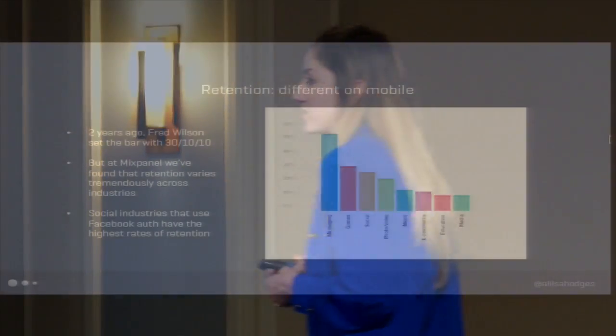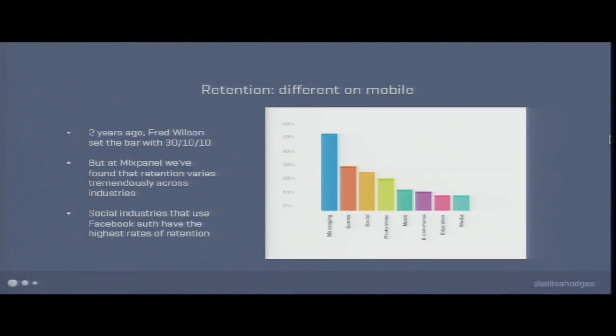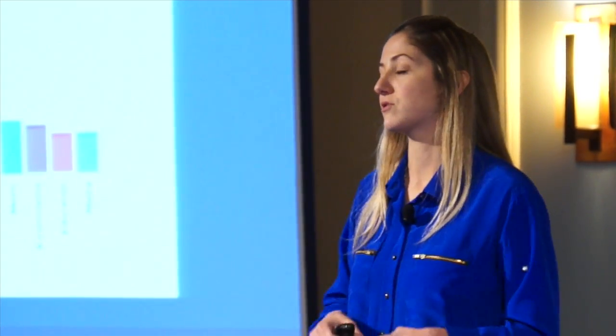The last thing I want to talk about is retention. We've heard retention used over and over again today, which makes me really happy, because retention at Mixpanel is our holy grail. MAU is a bullshit metric — what you really should focus on is retention, how many people are coming back again and again. Fred Wilson a couple years ago said that the benchmark for retention is the 30-10-10 rule: 30% of people that download the app will use it in a given month, 10% of those will use it daily, and 10% of those will use it at any given moment.